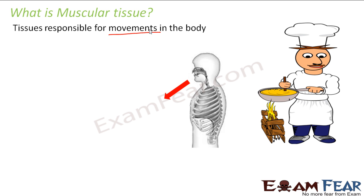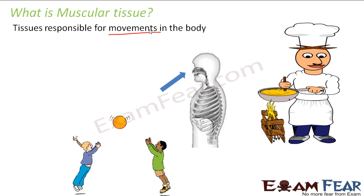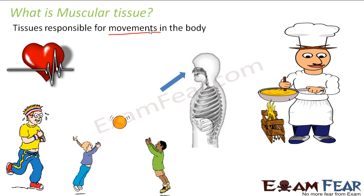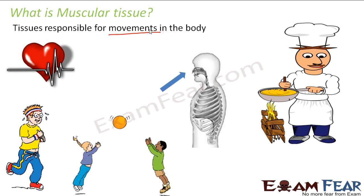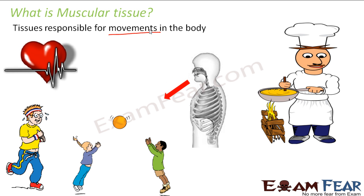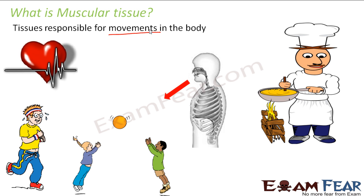Not only the breathing process — whatever we do, for example while cooking, we are moving our hands. We are able to move our hands because of the muscles present in them. Similarly, while playing or when we are running, our heart beats. All these movements are because of some muscles associated with them. The movement of the heart is also because of the heart muscles, due to the contraction and expansion of those muscles.